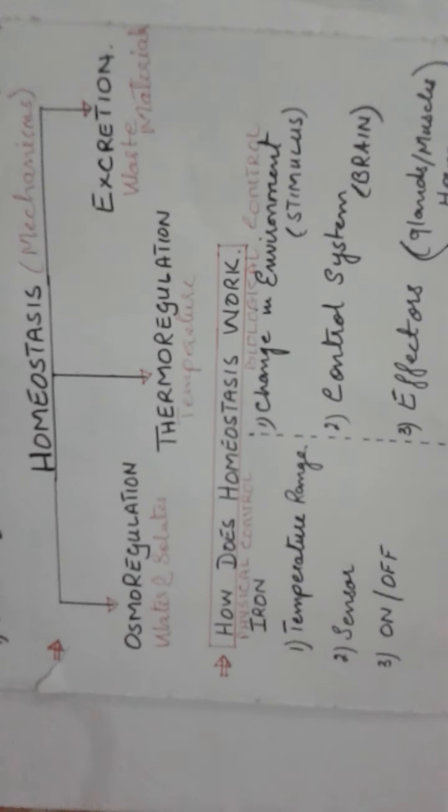Osmoregulation is the mechanism of regulation between organisms and their environment of solutes and the gain and loss of water. Excretion is the mechanism which eliminates nitrogenous waste from the body. Thermoregulation is the maintenance of internal temperature within a tolerable range.